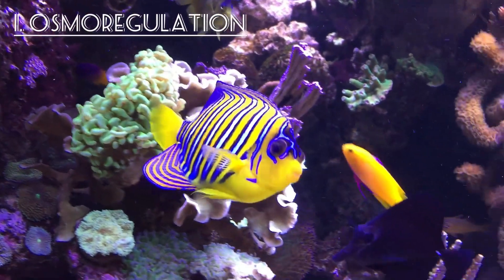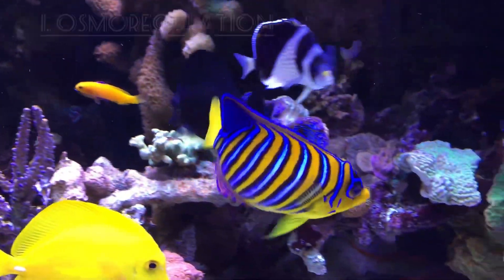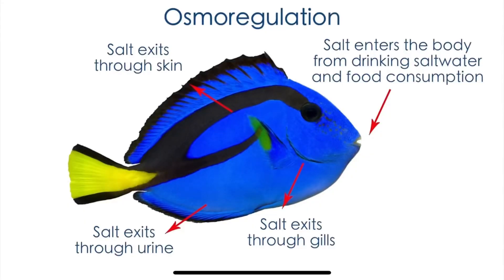First and foremost, maintaining the correct salinity level is essential for osmoregulation. Marine organisms have evolved to live in specific salinity levels. Maintaining the correct salinity ensures that they can properly regulate the balance of water and salts within their cells, which is essential for their survival.